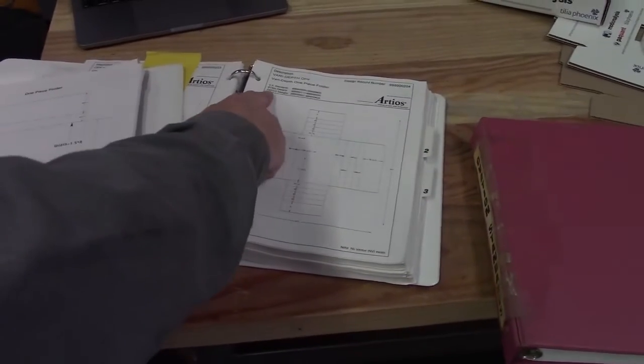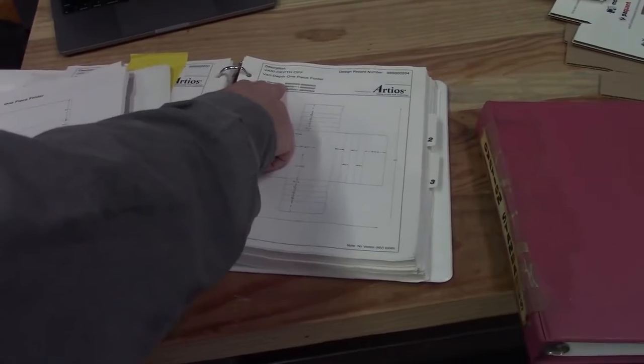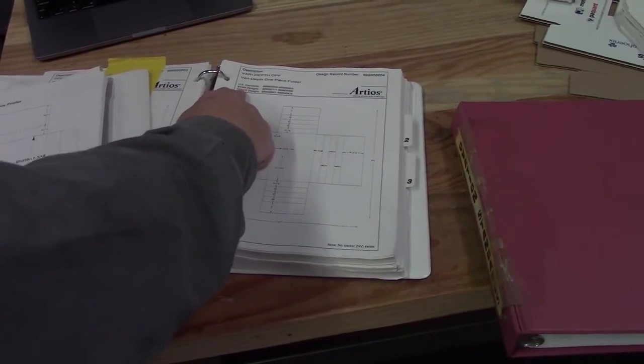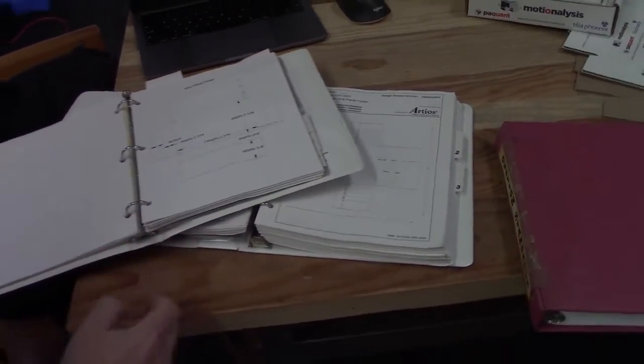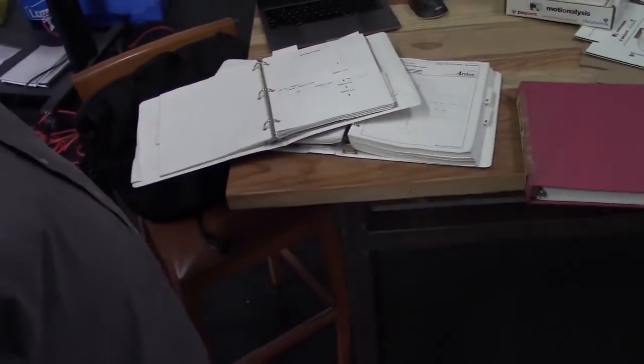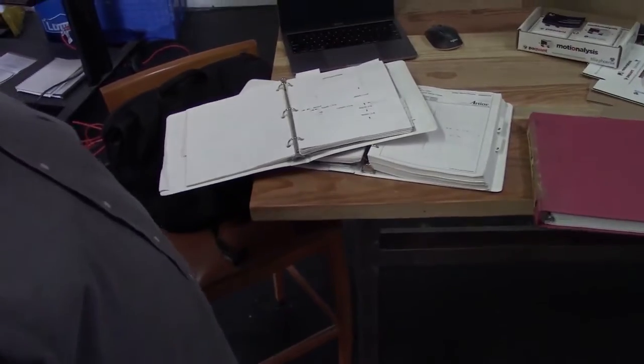So you can see here it's kind of interesting for the standard. It says US Standard, ECMA, and FEFCO. ECMA and FEFCO are standard libraries out of Europe that you can associate numbers to for the language. They might call a box a 201 or a number.